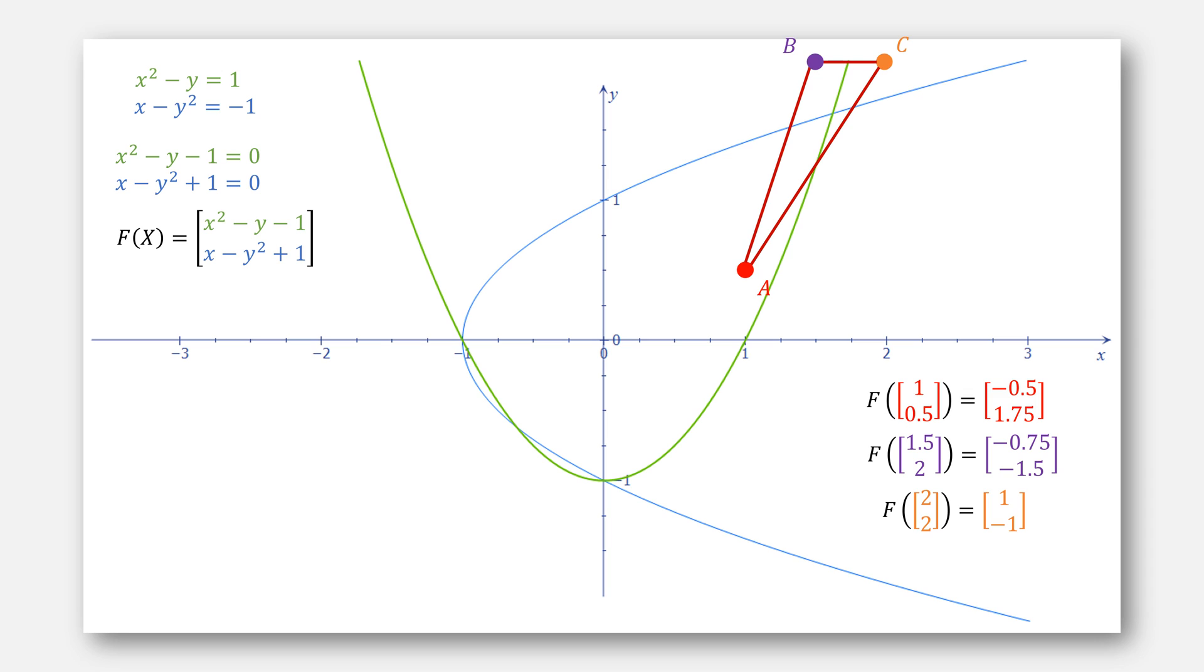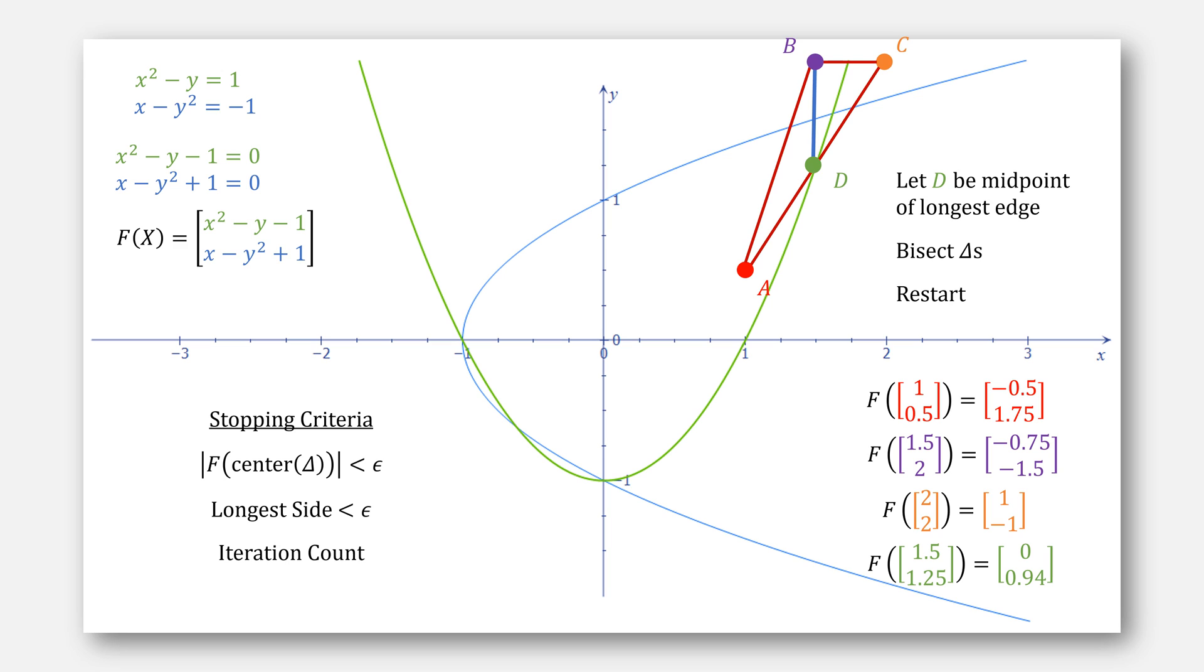Then we evaluate the midpoint D between our longest edge, in this case A, C, at this point. Then bisect our triangles in two and restart the process. We'll stop whenever our center of the triangle is less than epsilon in the norm, or our longest side length is less than some epsilon, or we reach a maximum number of iterations.